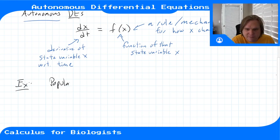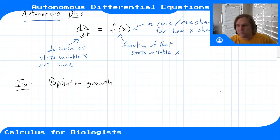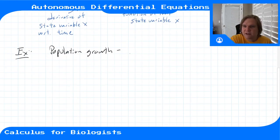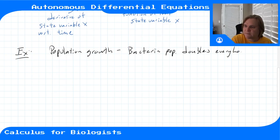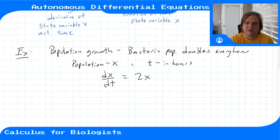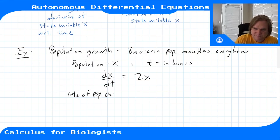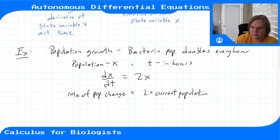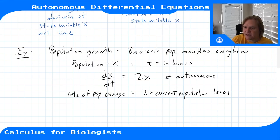A classic example is population growth. We've done a lot of these examples as discrete time systems, and now we'll see how to write them as autonomous differential equations. Let's say a bacteria population doubles every hour. We'd say the population is x, let T be in hours, and then our differential equation is dx/dt = 2x. This says the rate of change of our population is equal to two times the current population level.